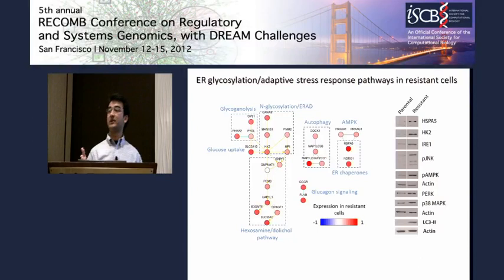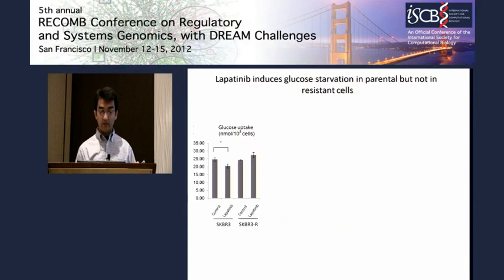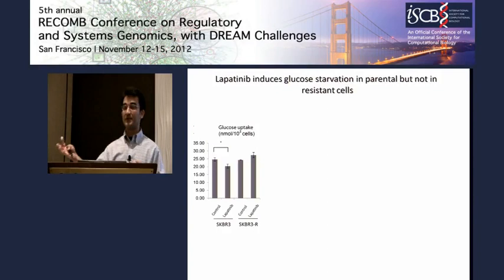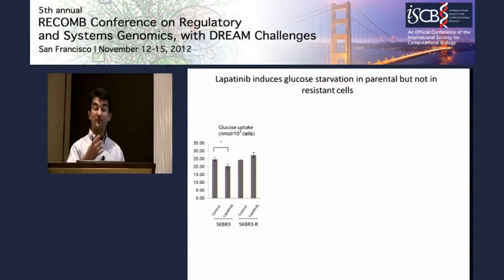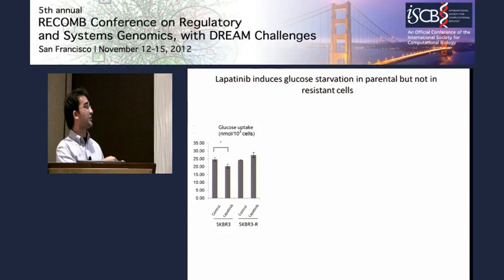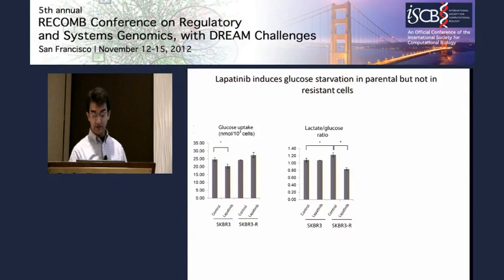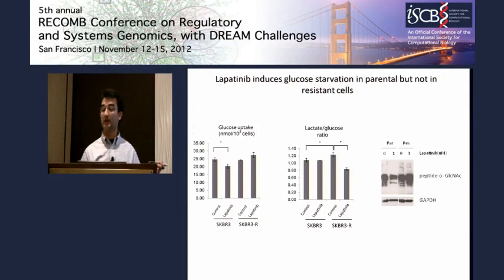Resistant cells are indeed displaying this ER stress response phenotype. Since hypoglycemic ER stress response pathways are specifically high in resistant cells, it may imply that these pathways are imposing protection against lapatinib. Lapatinib treatment in parental cells induces glucose starvation and ATP depletion. And very interestingly, glucose in resistant cells after lapatinib treatment is channeled towards the hexosamine pathway, which was shown to be specifically upregulated in resistant cells.